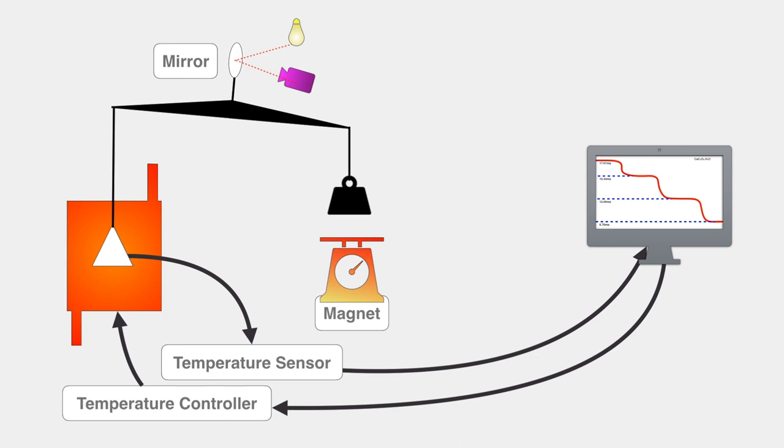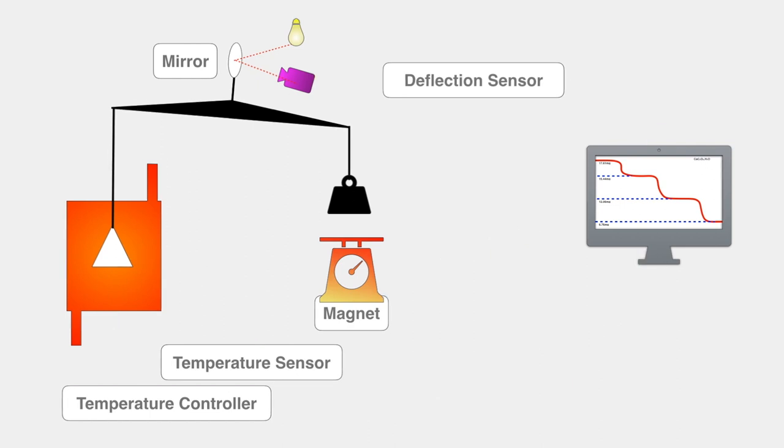During this movement, the mirror attached to the balance reflects the light at a certain angle. This deflection in light beam is recorded by the computer and the computer again sends the required amount of the current to the magnet so that the reference weight is again pushed upward and mirror is moved to its horizontal position.